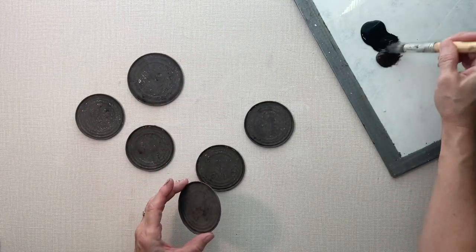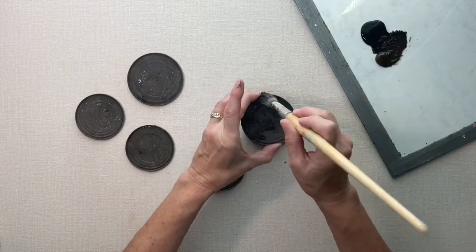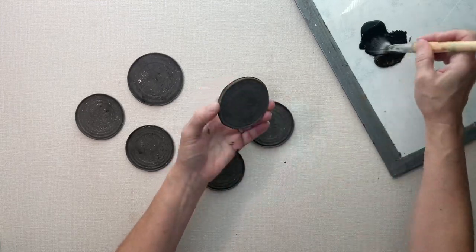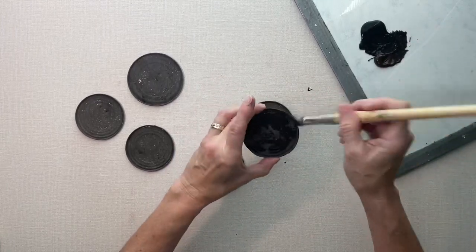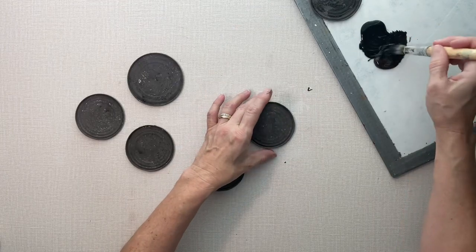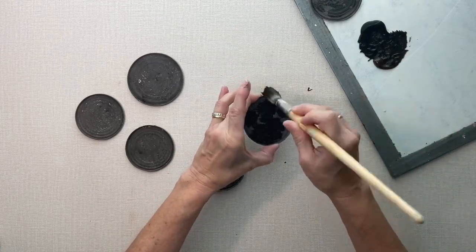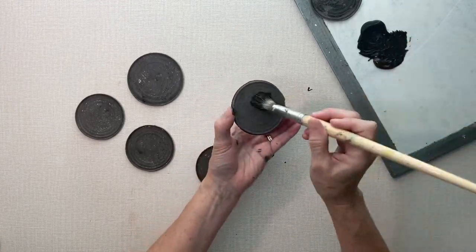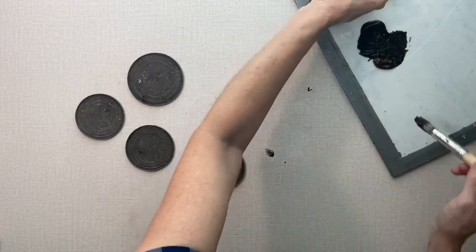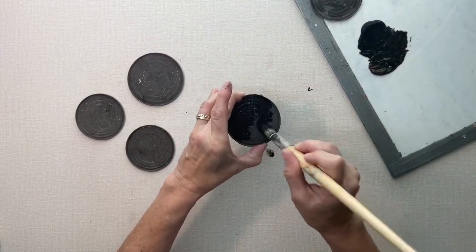So now that it's dry, I'm taking black and brown paint without the plaster of Paris and I'm just kind of dabbing it on, not solid, just dabbing in places. I'm just creating a rustic and after-a-while rusty look.